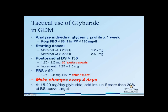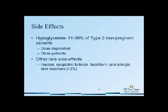We add insulin if more than 30% of blood glucose readings are above target. The failure rate of glyburide is approximately 20%, meaning about 20% of our patients will need to be on insulin in addition to their glyburide to achieve glucose targets.